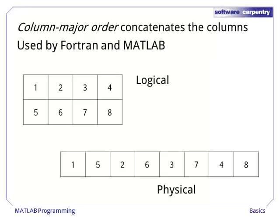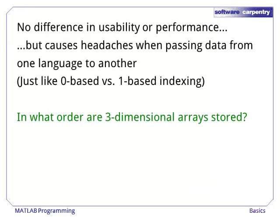In contrast, column major order concatenates the columns. The FORTRAN language uses column major ordering, and since MATLAB uses many matrix manipulation programs from FORTRAN, MATLAB uses the column major ordering. As an exercise, see if you can guess how the two types of languages store three-dimensional or higher-dimensional data.